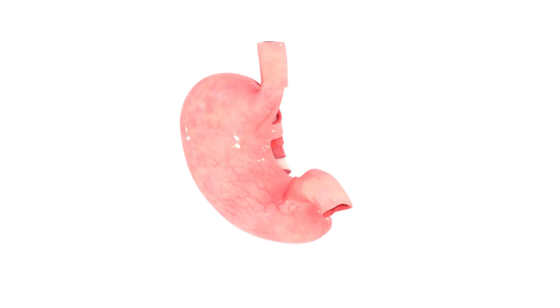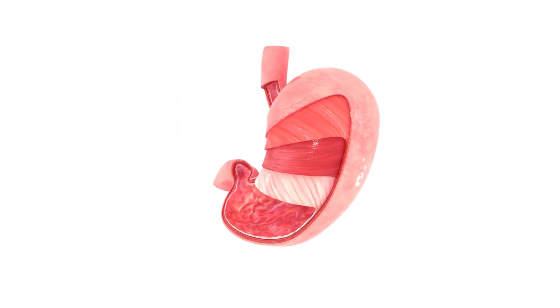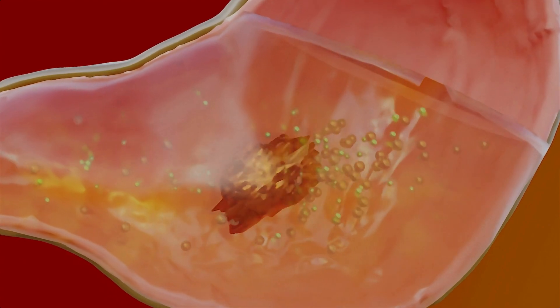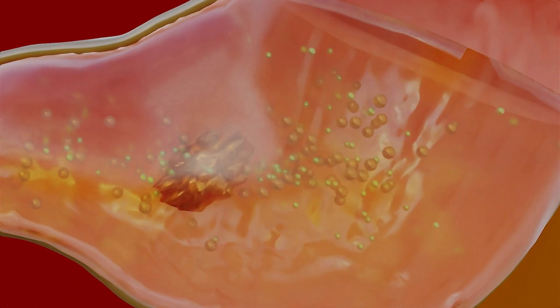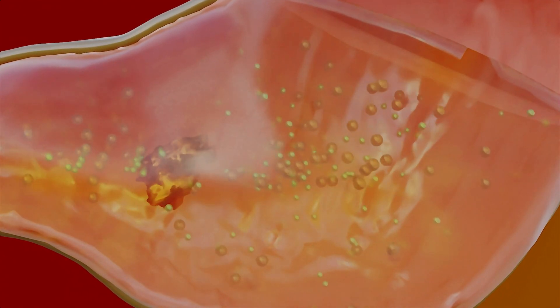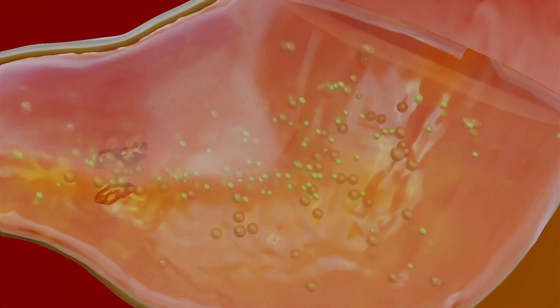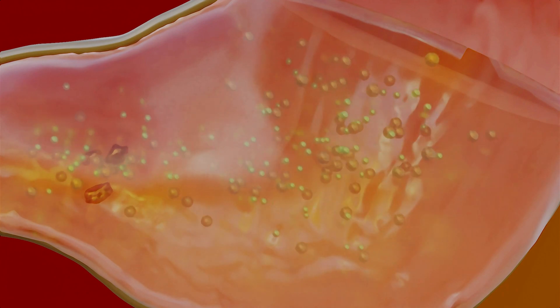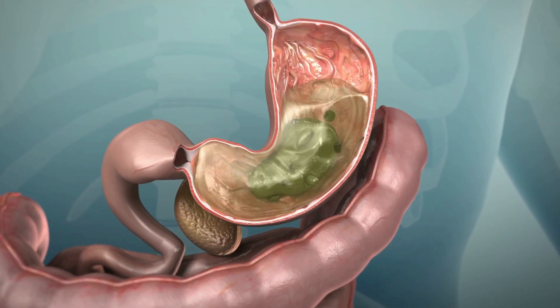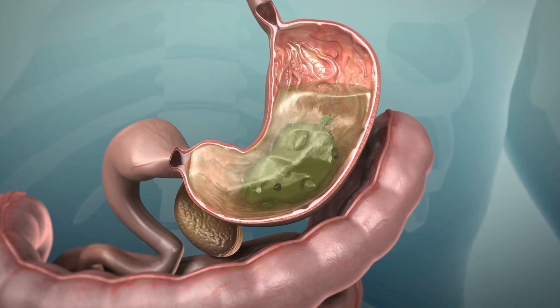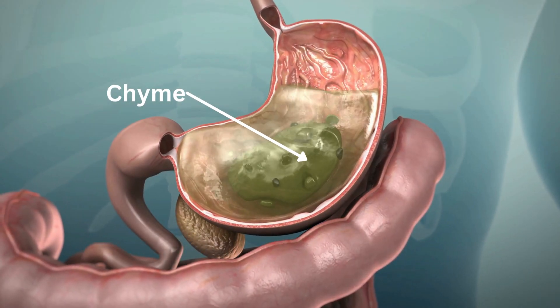Next we have the stomach, a muscular organ resembling a bag. It secretes gastric juices, including hydrochloric acid and enzymes, to break down proteins and kill harmful bacteria. The stomach churns and mixes food, turning it into a semi-liquid mass known as chyme.